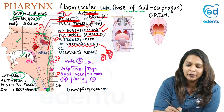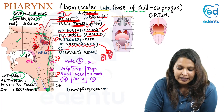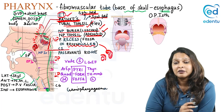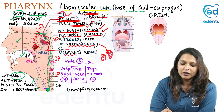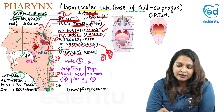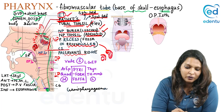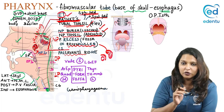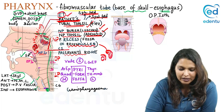The nasopharynx extends up to C1 level. An important feature here is Passavant's ridge, which is caused by the palatopharyngeal muscle and is a component of the nasopharyngeal isthmus. When food is swallowed, the soft palate will go upwards and hit against Passavant's ridge, closing the nasopharyngeal isthmus.